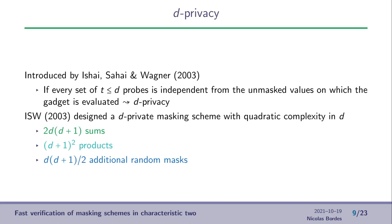A gadget is said to be D-Private when every set of less than D probes on this gadget is independent. The distribution of these probes are independent from the unmasked values on which the gadget is evaluated. In the same paper, in 2003, they designed D-Private masking schemes for any D, which has quadratic complexity in D, the order of the masking.